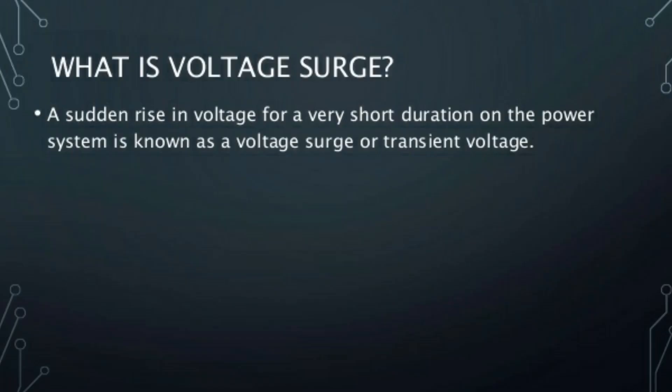Today we are going to discuss about what is practically a lightning arrestor. A lightning arrestor is also known as a surge arrestor or surge diverter. Lightning is caused by a sudden rise of voltage, which is known as a surge.